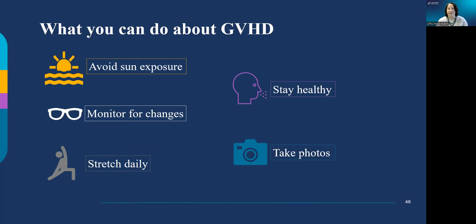With all of these possible problems in mind, there are things you can do to decrease your risk of graft-versus-host disease and detect it early. Avoid sun exposure to reduce the risk of GVHD flares. Monitor yourself for changes — since chronic GVHD often develops slowly, you might be the first to notice. Stretch daily, as this is a good way to monitor your joints. Stay healthy, since infection ramps up the immune system and can precipitate a flare. Take photos of your skin, mouth, and flexibility changes over time, and show these to your local healthcare providers and long-term follow-up.